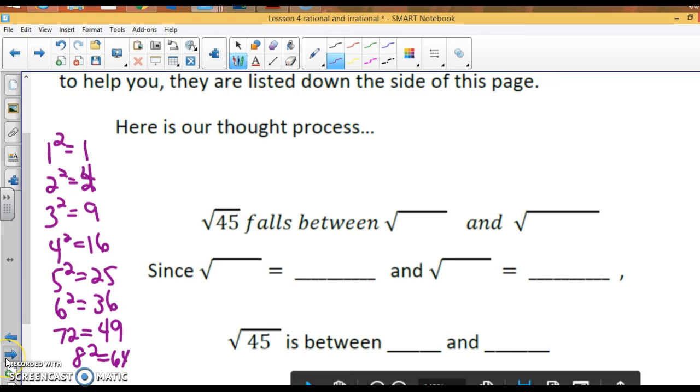Now, if I want to estimate the square root of 45, 45 falls in between 36 and 49. So it falls between the square root of 36 and the square root of 49. Since the square root of 36 is 6 and the square root of 49 is 7, we know that the square root of 45 is going to be between 6 and 7. Now, let's be a little bit more practical. Isn't it closer to the square root of 49? I would say a good estimate would be like 6.8. That's an estimate because we know that it's closer to 49 than it is to 36.